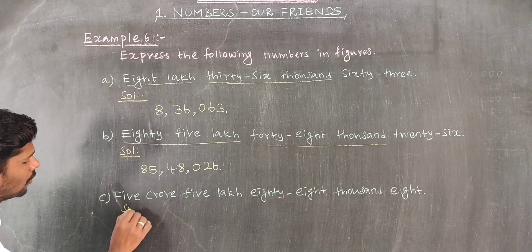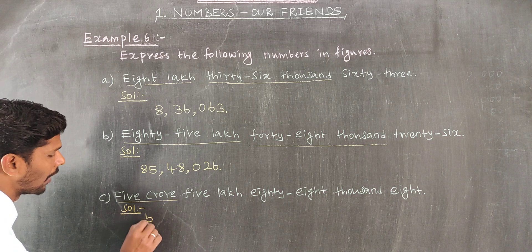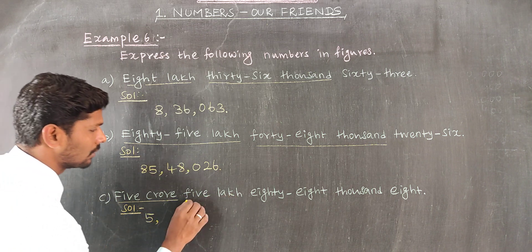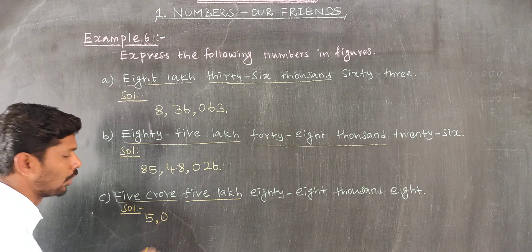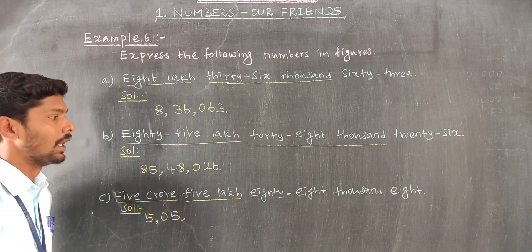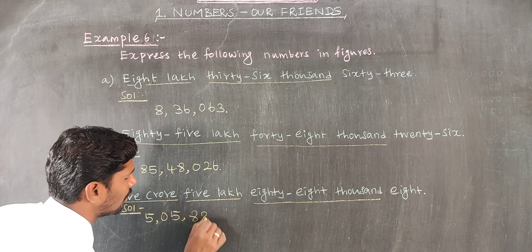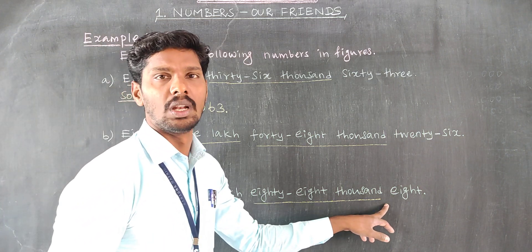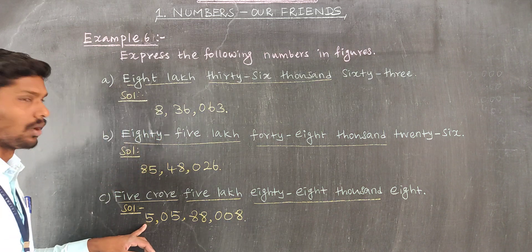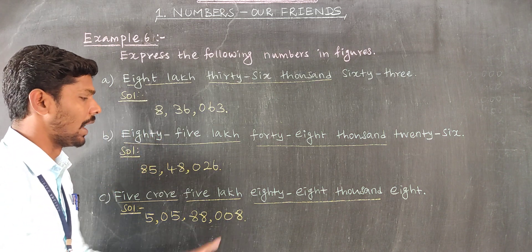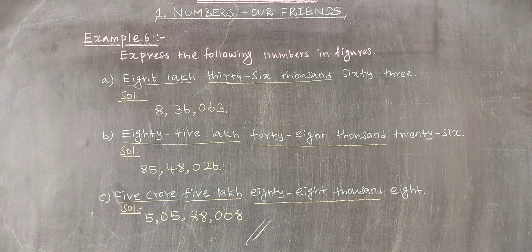Next, see the solution. Five lakhs means 5,00,000. Then 0 ten thousands, 8 thousands which is 8,000, then 0 hundreds, 0 tens, and 8 ones. So 5 lakhs and 8 thousand 8: 5,08,008.